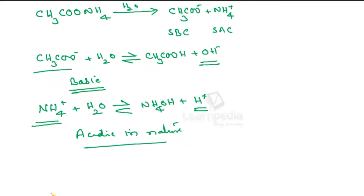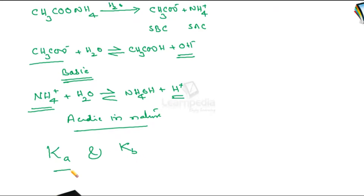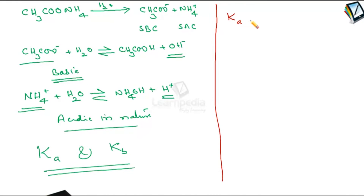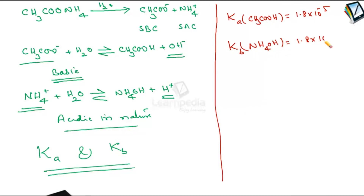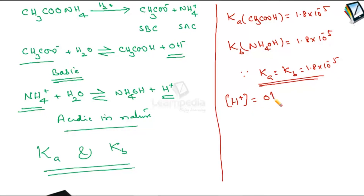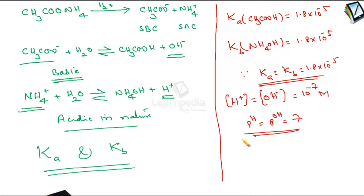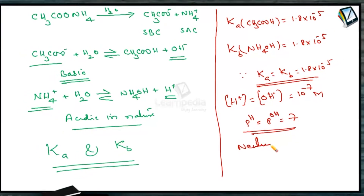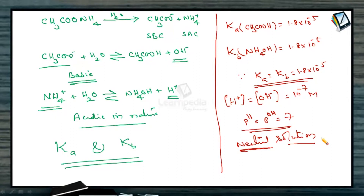How do you know the relative strengths of these two? By knowing the KA and KB values of acetic acid and ammonia respectively. The KA for acetic acid is nearly 1.8 × 10⁻⁵. The KB for ammonia (ammonium hydroxide) is also 1.8 × 10⁻⁵. Since KA equals KB equals 1.8 × 10⁻⁵, both cationic and anionic hydrolysis take place to the same extent. Therefore the concentration of H⁺ equals the concentration of OH⁻, both equal to 10⁻⁷ molar. Therefore pH equals pOH equals 7, and this solution of ammonium acetate is neutral. For other salts of weak acid and weak base, the nature of the solution depends on the KA and KB values.